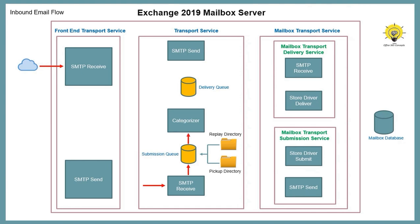Then the Categorizer picks that email from the submission queue. It first verifies if the destination email address is correct. If the email is sent to a distribution group, the Categorizer expands the DL to identify the email address of each member. Then the Categorizer performs routing resolution to identify if the recipient is internal or external, and hands the email to the delivery queue. If the recipient is external, the email is routed to the internet through a send connector. If the recipient is internal, the email is forwarded to the Store Driver Delivery Service, which delivers it to the mailbox database and ultimately to the user's mailbox.